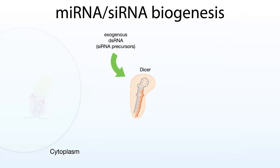Plants and invertebrates use this as an antiviral defense mechanism — they can actually use viral double-stranded RNA in order to produce siRNAs that target viral sequences. But mammals have evolved more complex immune systems, and typically we don't use siRNAs to any great extent for this antiviral purpose. However, our bodies are capable of producing mature siRNAs from precursors that are introduced exogenously.